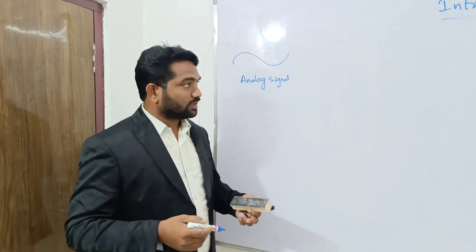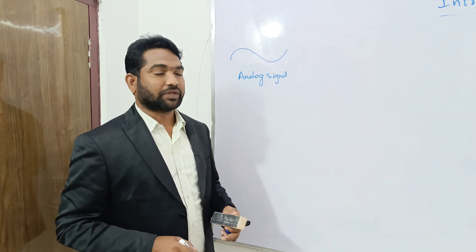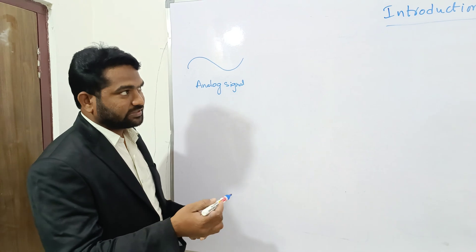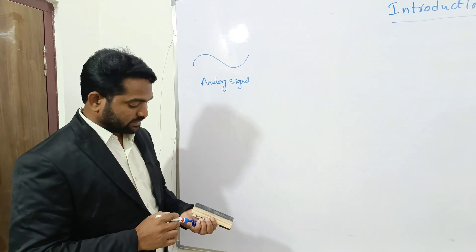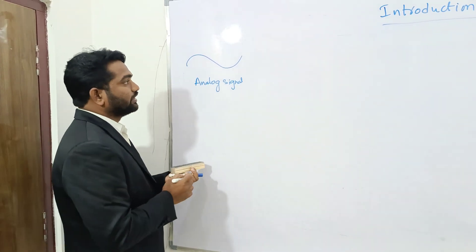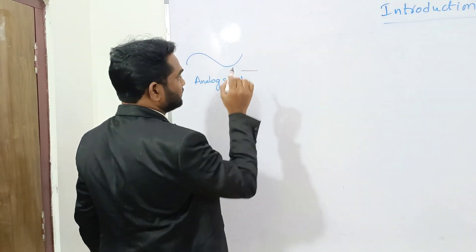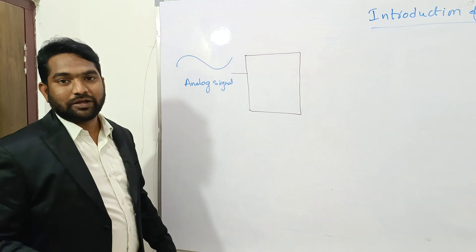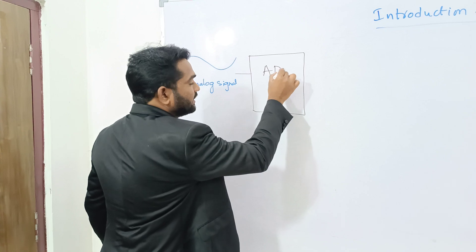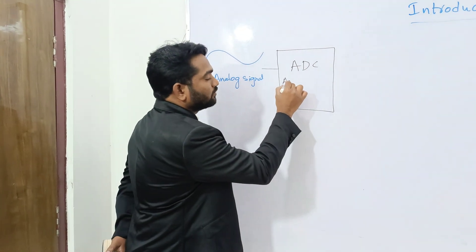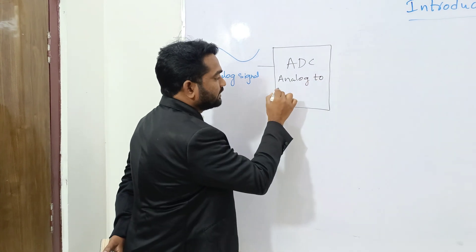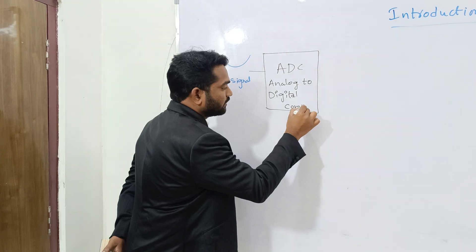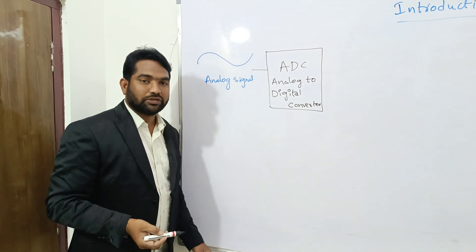Also, if we want to transmit the signal from one device to another, the problem of noise is more. This is one of the major disadvantages of analog system. To process or transmit an input signal in a digital system, what we are doing is simply converting this analog signal into a digital signal. To convert this analog signal into digital signal, we are using a block called ADC — Analog to Digital Converter.